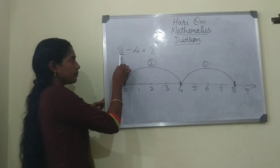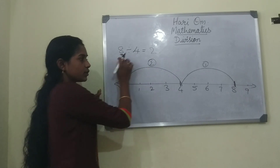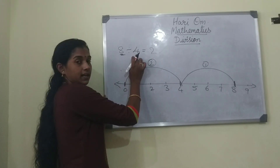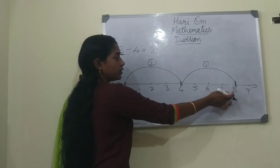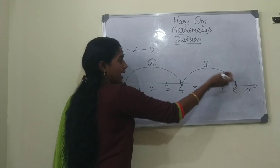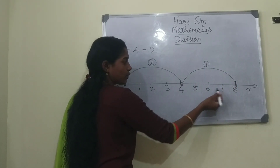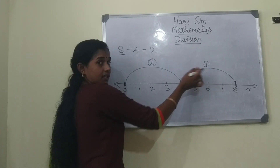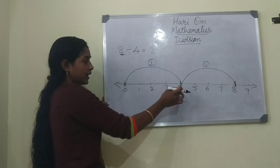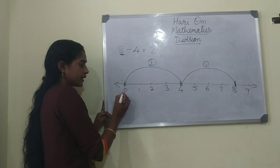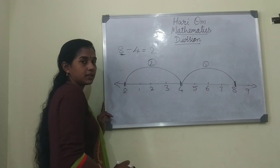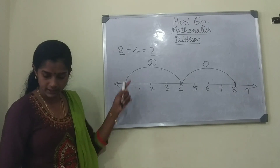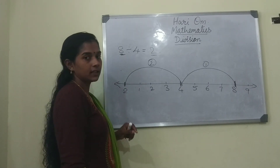Understood children? The dividend is 8, so we begin from 8 and count the divisor 4 numbers backward and jump. From 8: 1, 2, 3, 4 — jump backward to 4. Again: 1, 2, 3, 4 — it is 0. We jumped 2 times, so the answer is 2. This is dividing on the number line.